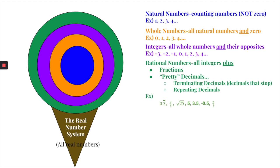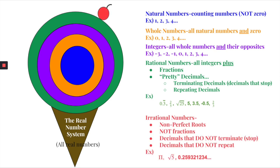Now you might be thinking: there are some numbers that aren't fractions or these 'pretty decimals' — what are those called? That's going to be our little cherry on top. It's not part of our ice cream, but it's still a real number — it still exists. These are called irrational numbers.